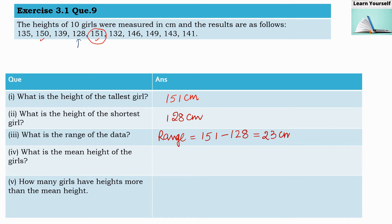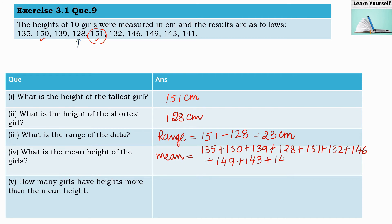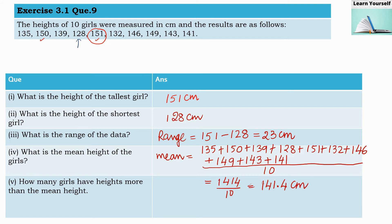Now we find the mean height of the girls. The arithmetic mean is calculated by adding all observations and dividing by the number of observations. The sum of all observations is 1414, and there are 10 girls, so 10 observations. 1414 divided by 10 gives us 141.4 centimeters as the mean height.